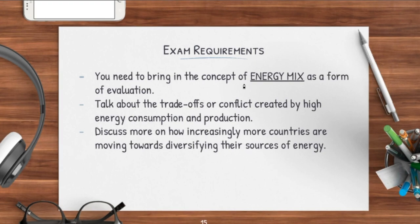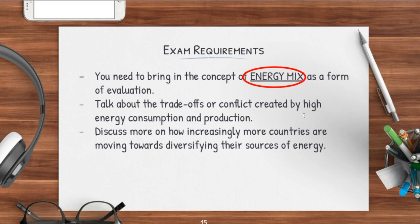You also need to bring in the concept of energy mix — in terms of the balance, which is your energy consumption versus your energy production — as a form of evaluation. Just talk about any trade-offs or conflicts created by high energy consumption and energy production, as well as how countries diversify their energy mix: are they going to cut down on fossil fuels to increase alternative energy sources like hydropower? For example, if you're talking about nuclear energy, you can explain in your evaluation that in the long run, with nuclear energy becoming a greater possible sustainable source, more countries are increasingly moving away from fossil fuels to diversify the energy mix in the form of alternative energy sources such as nuclear. Hence, this would bring about greater sustainability for countries and for the world — that's a very good evaluation already.